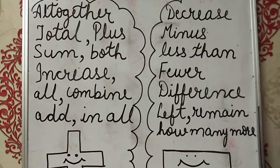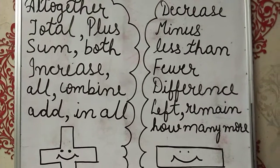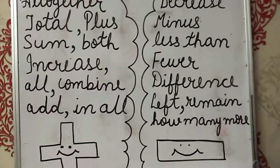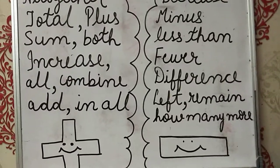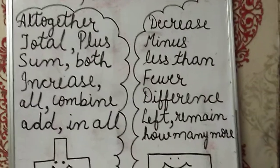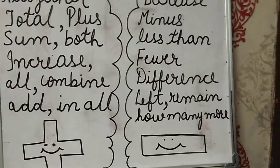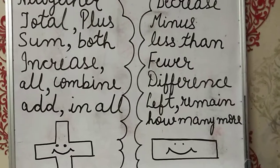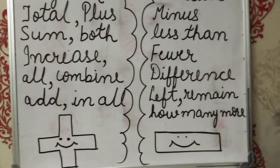Left means remaining. So the remain and the left words are both keywords for subtraction. How many more - how many more mango trees are there in the farm of my grandfather than in the farm of my friend's grandfather.